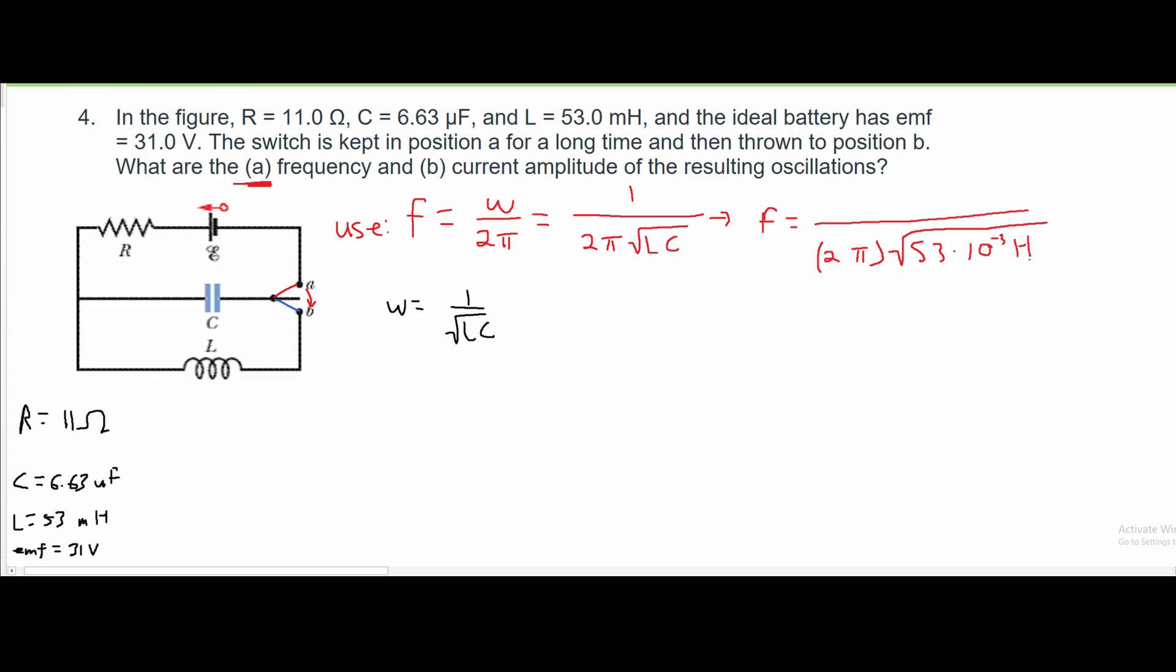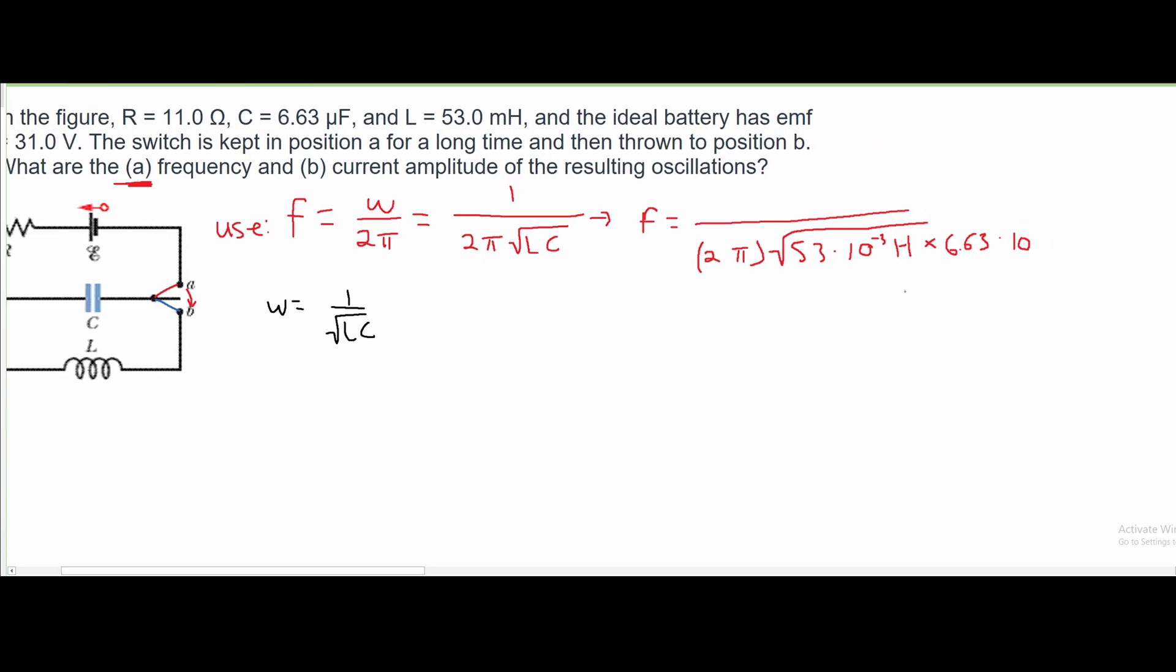And then we need our C, which is in microfarads. So we need to have 6.63 times 10 to the negative 6, and we get farads from that. Bring our square root over, division sign over.